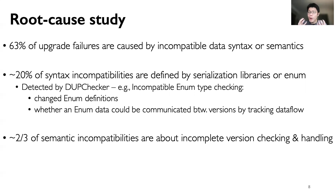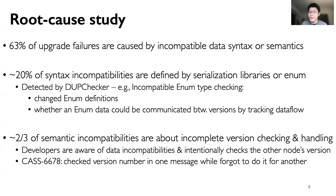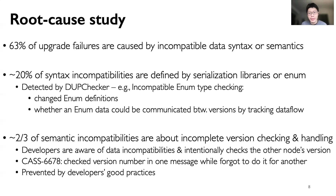In addition, we found that about two-thirds of data semantic incompatibilities are caused by incomplete version checking and handling. These failures happen when developers are already aware that another node could send incompatible data and intentionally check the software version running on the other node, but fail to do it correctly. For example, this Cassandra bug happened because developers checked the version number in one network message but forgot to do it for another. We found four good developer practices that could prevent the majority of such issues.